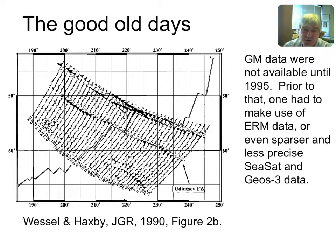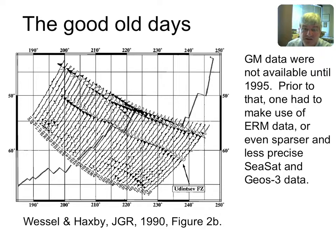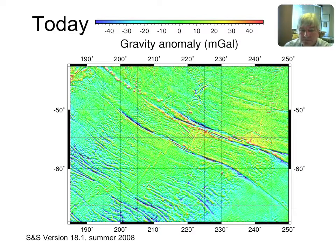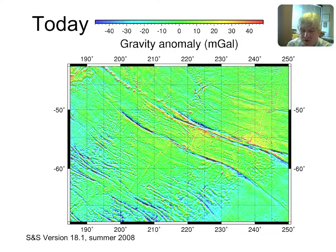In the good old days before 1995 when dense track data became available, the best approach was to use repeat track data, average all the measurements to reduce oceanographic noise, and get a clearer picture of the geoid. This is from a paper Paul wrote with Bill Haxby on geoid anomalies associated with fracture zones and what you can infer about thermal stress in tectonic plates. We don't need to do that anymore since we have very dense track data available since 1995. This is our best current reconstruction of gravity anomalies in the area.